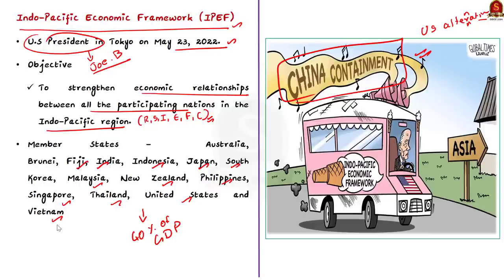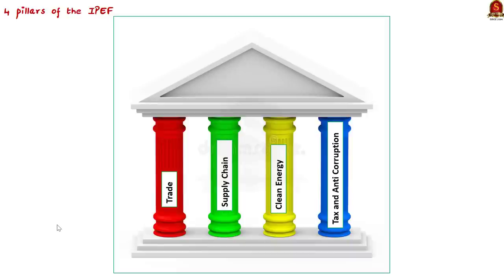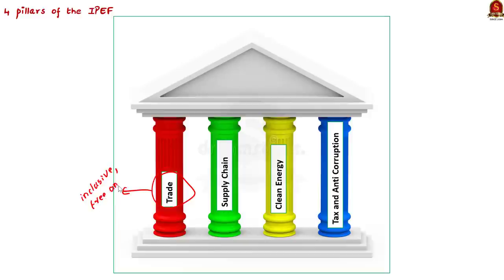Now let us see the four pillars of the framework. The first is the trade pillar. Through this, the IPEF aims to build high-standard, inclusive, free, and fair trade commitments. It also aims to develop new and creative approaches to trade and technology policy.